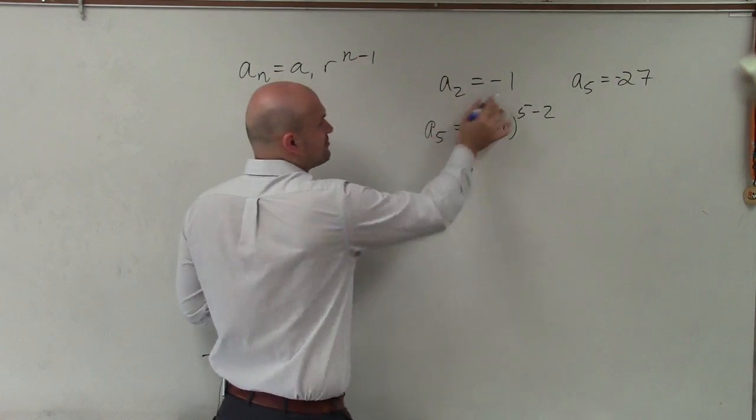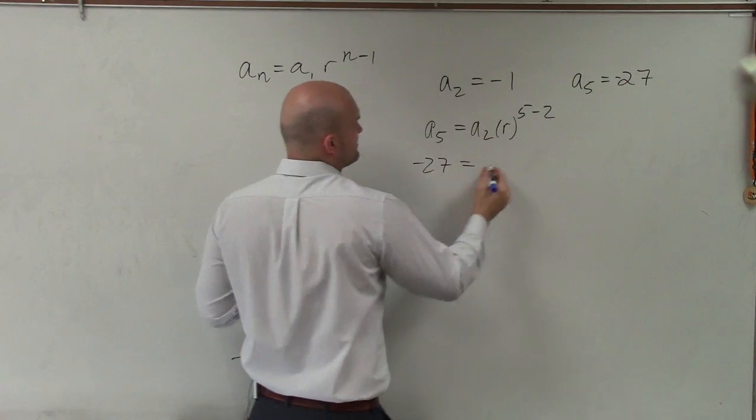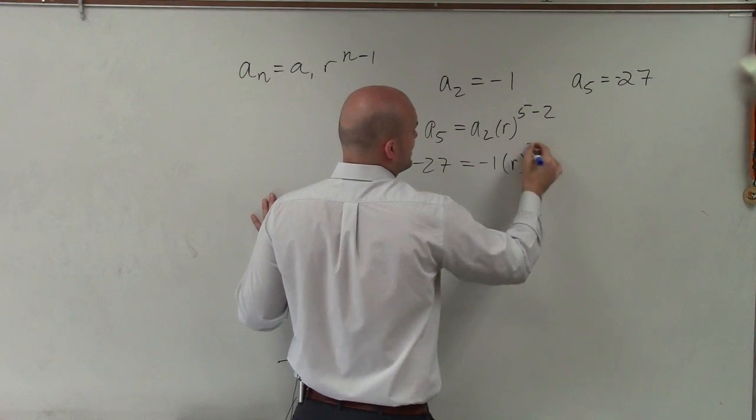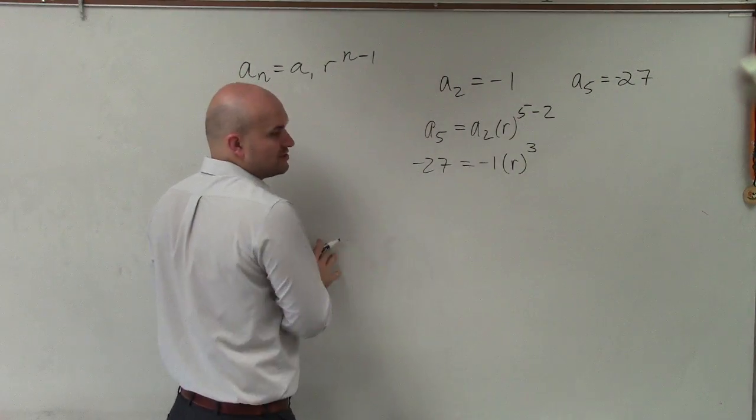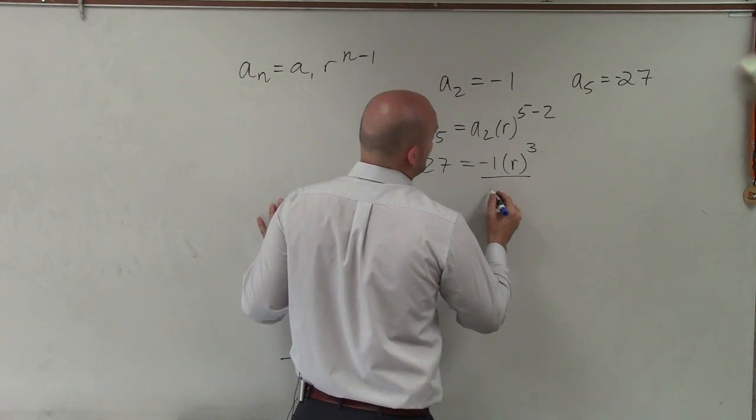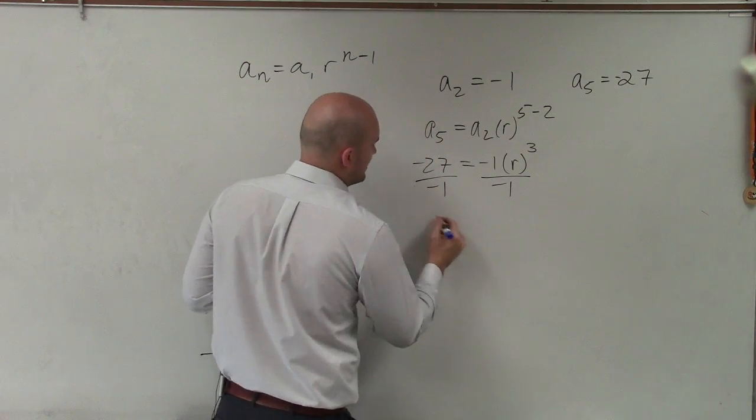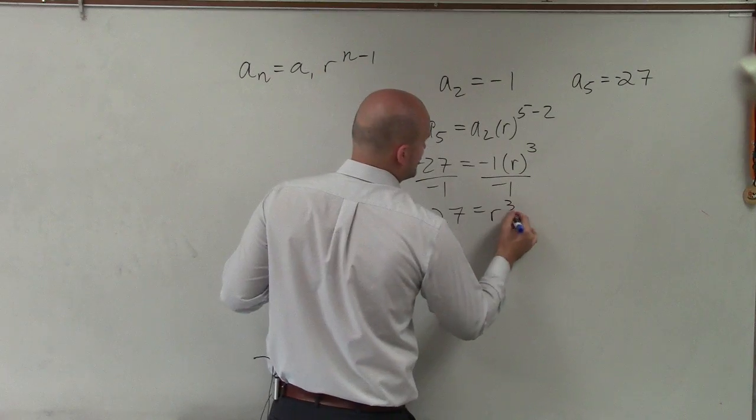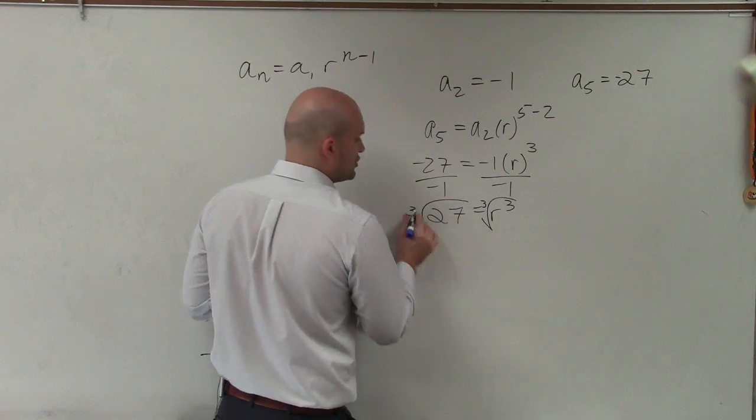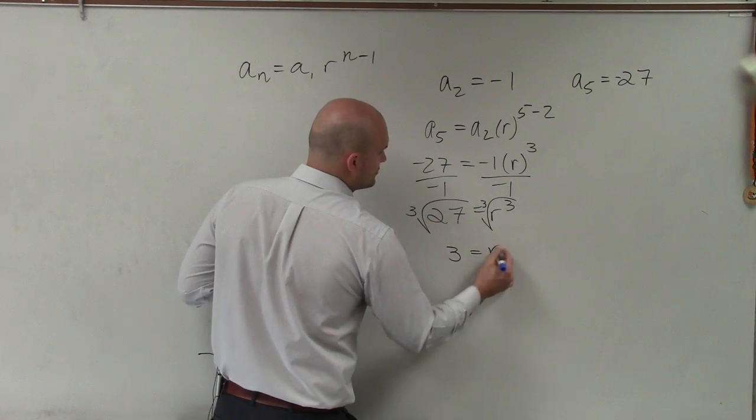Now, let's go ahead and evaluate. Let's plug in what we have. So a sub 5 is negative 27 equals a sub 2, which is negative 1, times r raised to the 5 minus 2 is 3. Let's solve for r, which will give us our ratio. I'll divide by negative 1. Positive 27 equals r cubed. Take the cube root on both sides. Therefore, the cube root of 27 is 3, so 3 equals r.